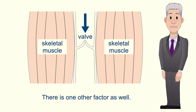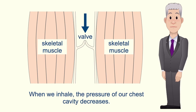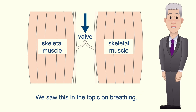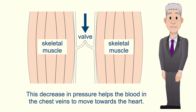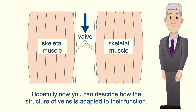There is one other factor as well. When we inhale the pressure of our chest cavity decreases, and this decrease in pressure helps the blood in the chest veins to move towards the heart. Hopefully now you can describe how the structure of veins is adapted to their function.